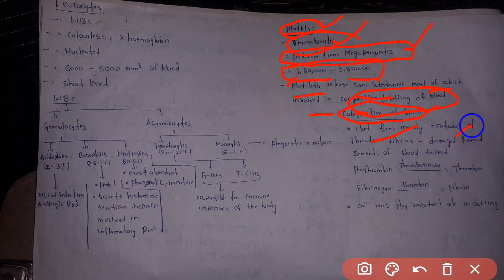Clot forms mainly a network of thread-like fibrins. Damaged formed elements of the blood are trapped in this network of threads, forming the blood clot.